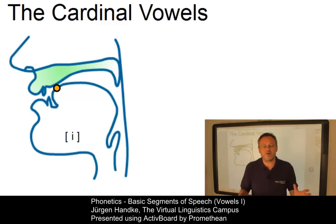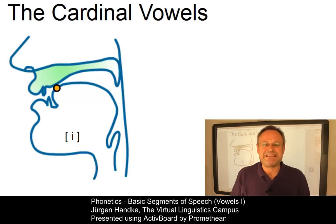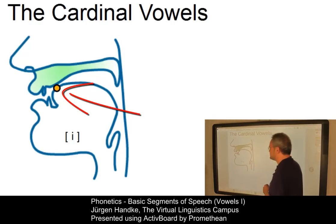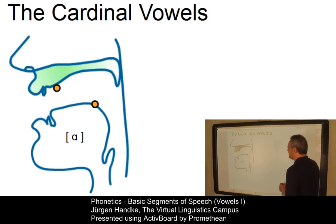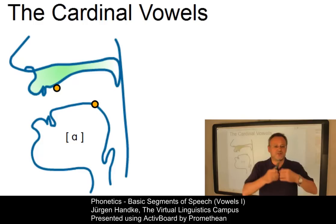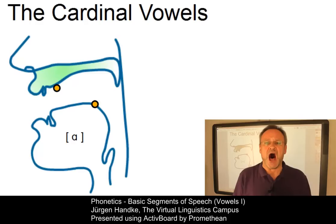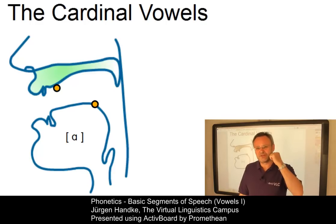First of all, there is a vowel that involves the highest possible tongue position in the mouth and the most front quality. This is the highest sort of 'ee' I can produce, and here is the place where the narrowing occurs. The second vowel that serves as a reference point is the opposite: a vowel which involves the lowest possible tongue position — you have to open your mouth — and the most back quality. Now my tongue is back and low in the mouth.